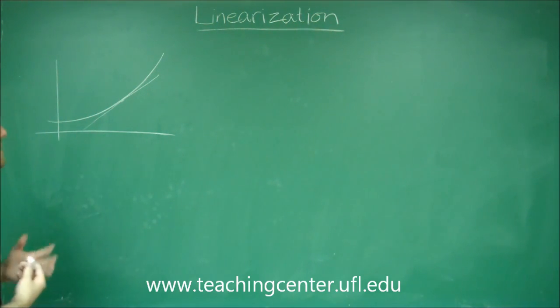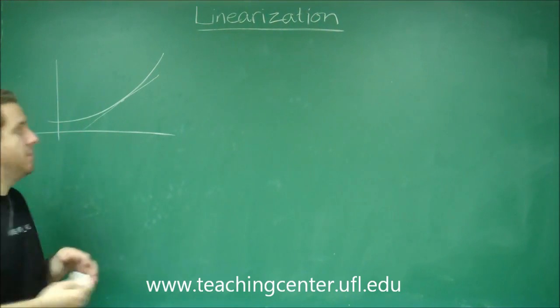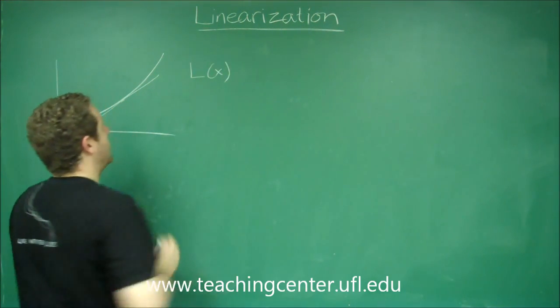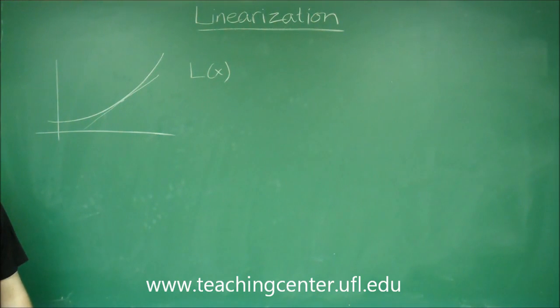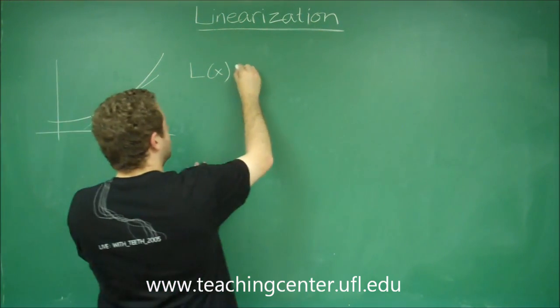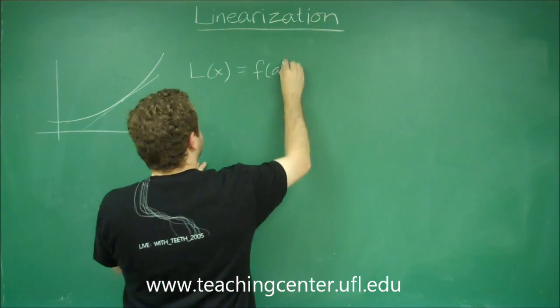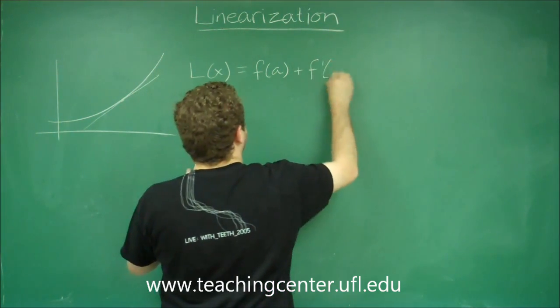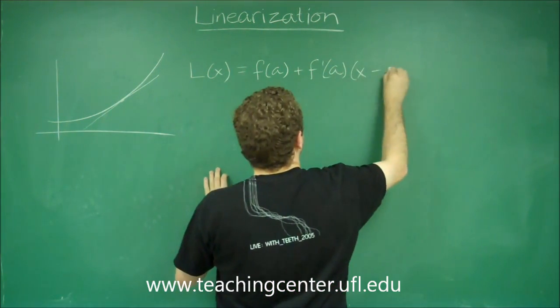So it's basically a formula you're just going to need to remember. L of x, meaning that equation, the line, is always equal to f of a plus f prime of a times x minus a.